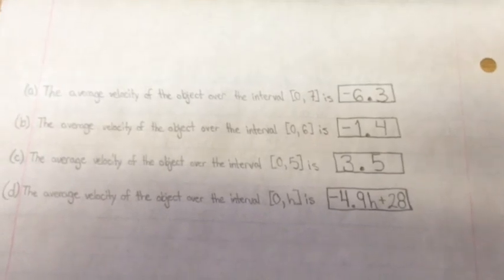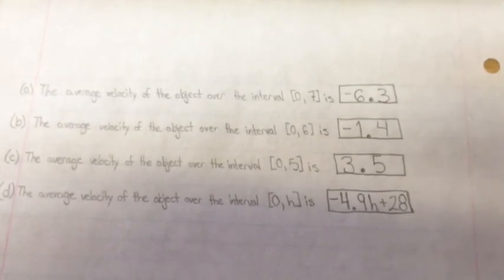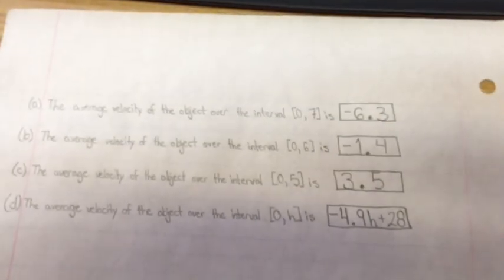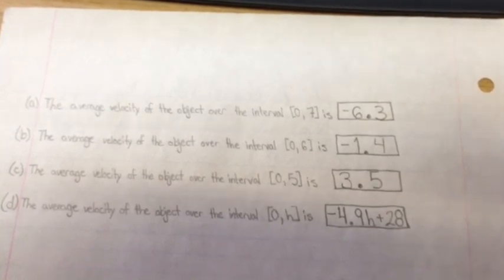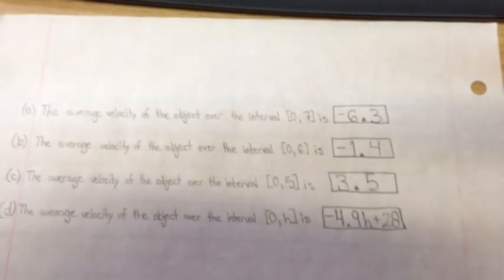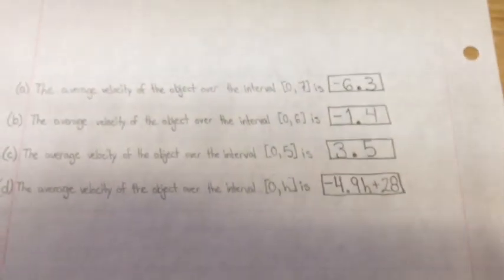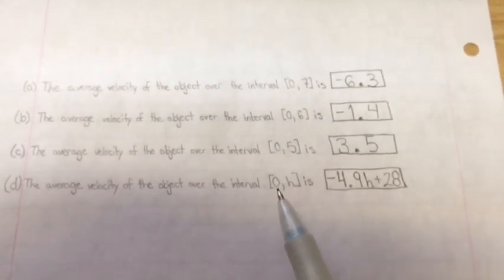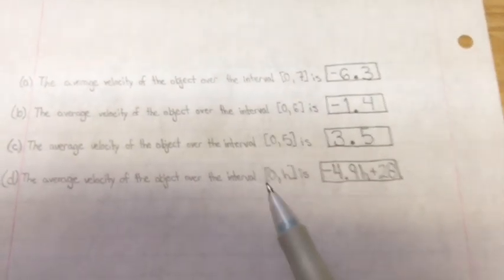Here's the intervals right here. So for [0, 7], -6.3; [0, 6], -1.4; [0, 5], 3.5. So it's getting larger and larger the closer we get to a smaller number. And then, of course, you have that interval, the [0, h].